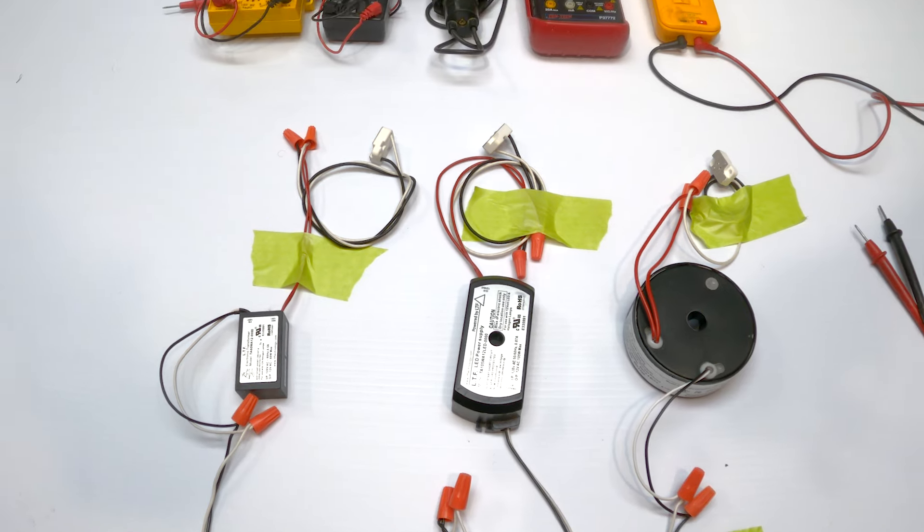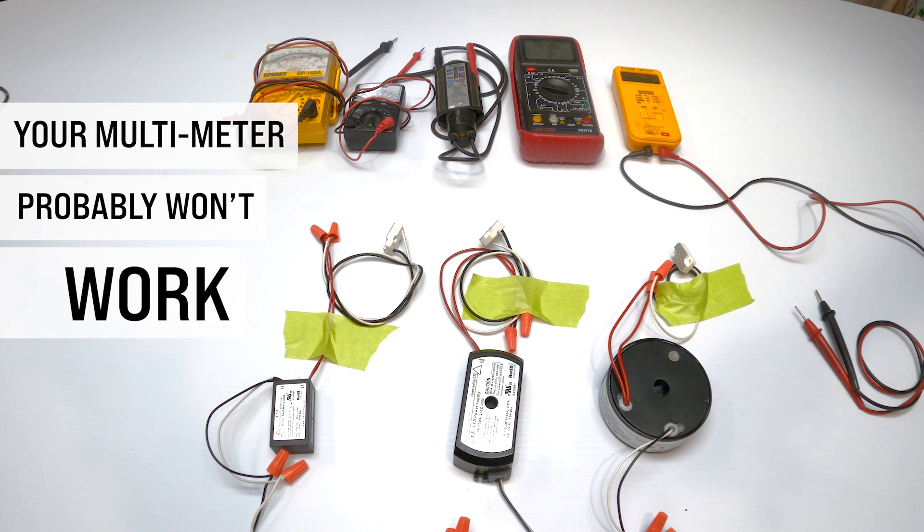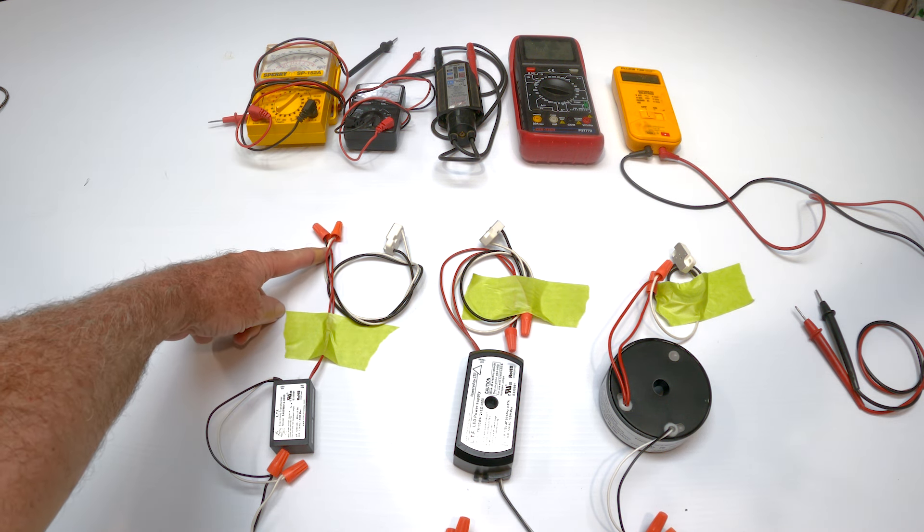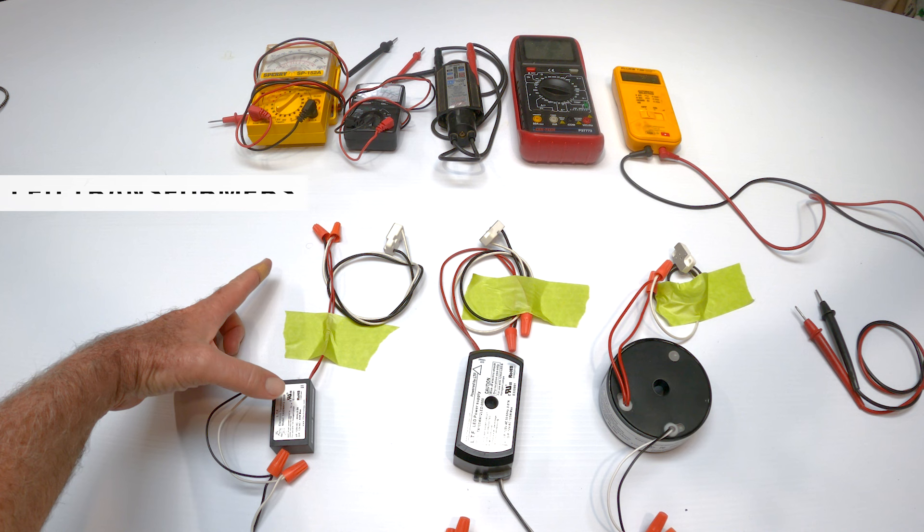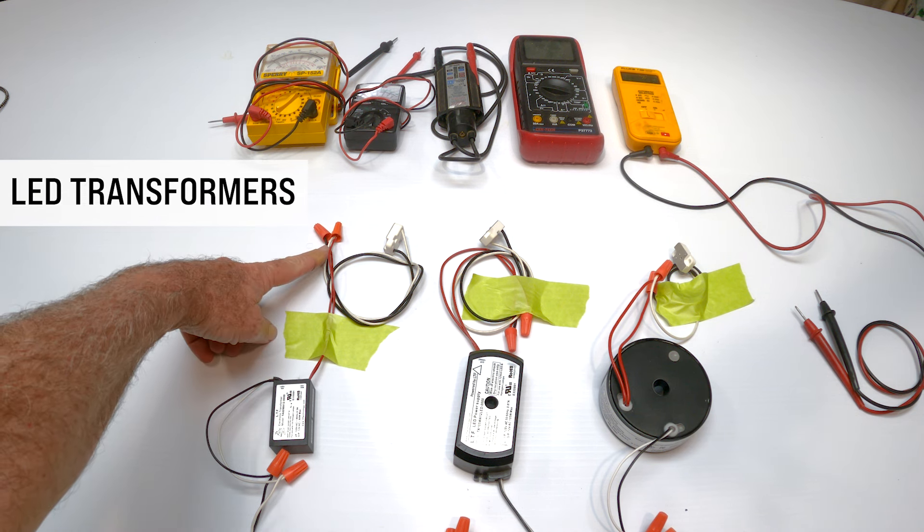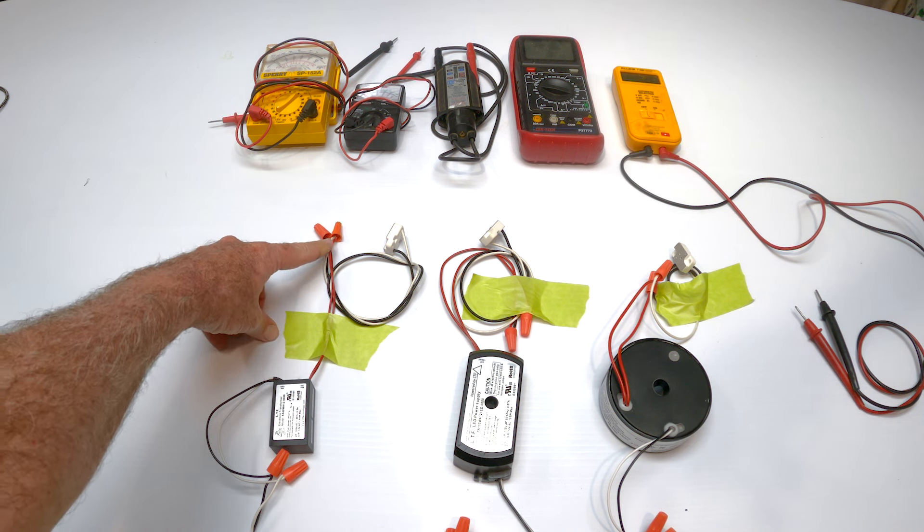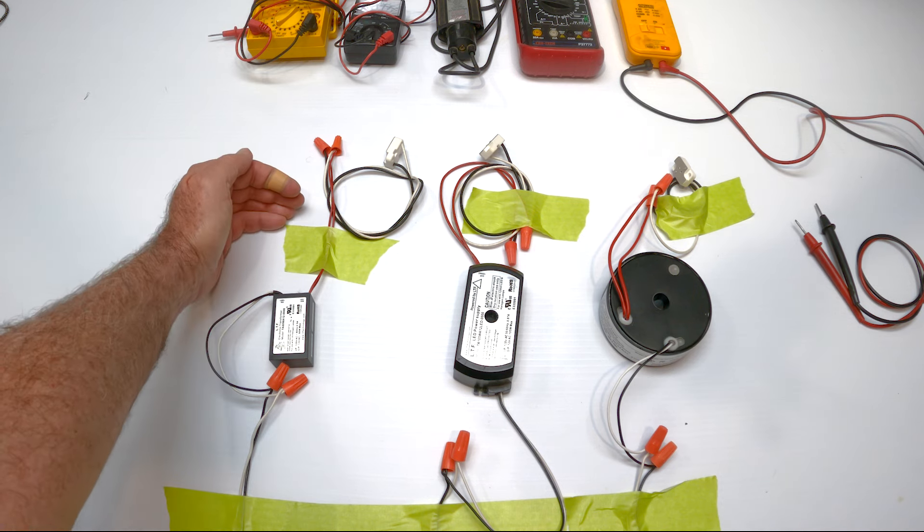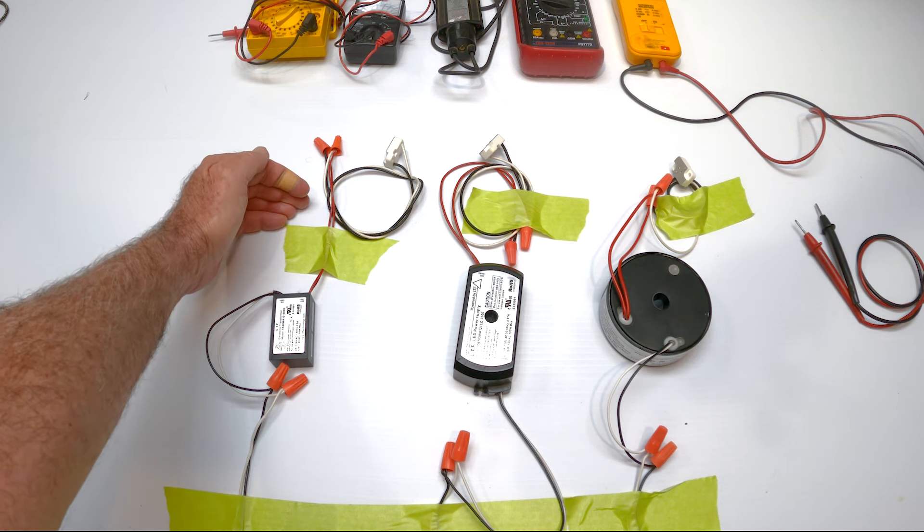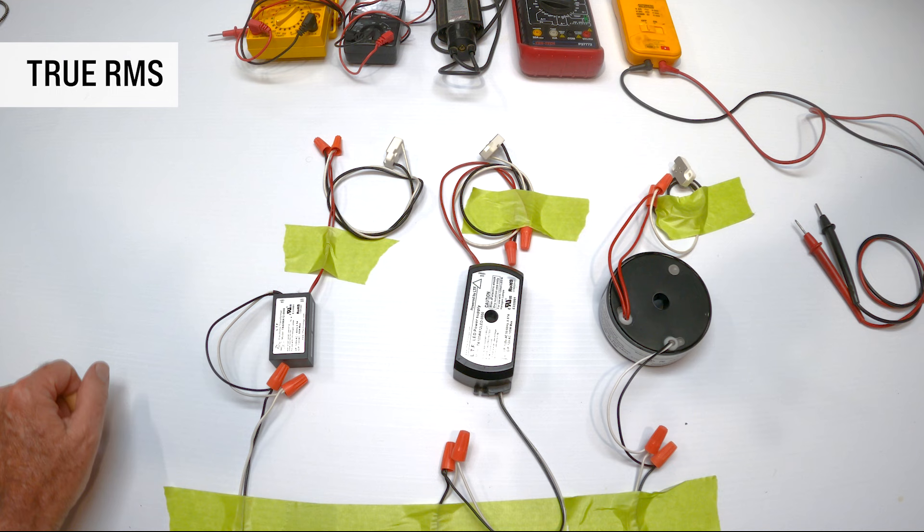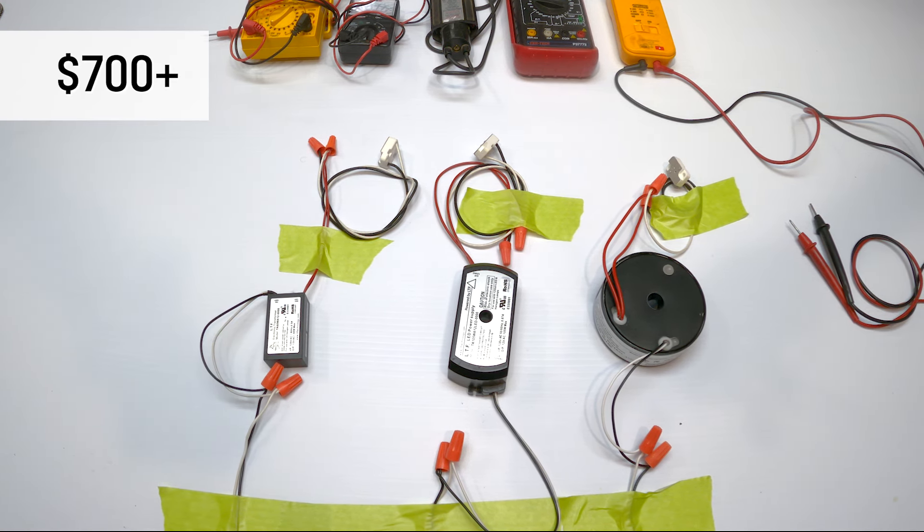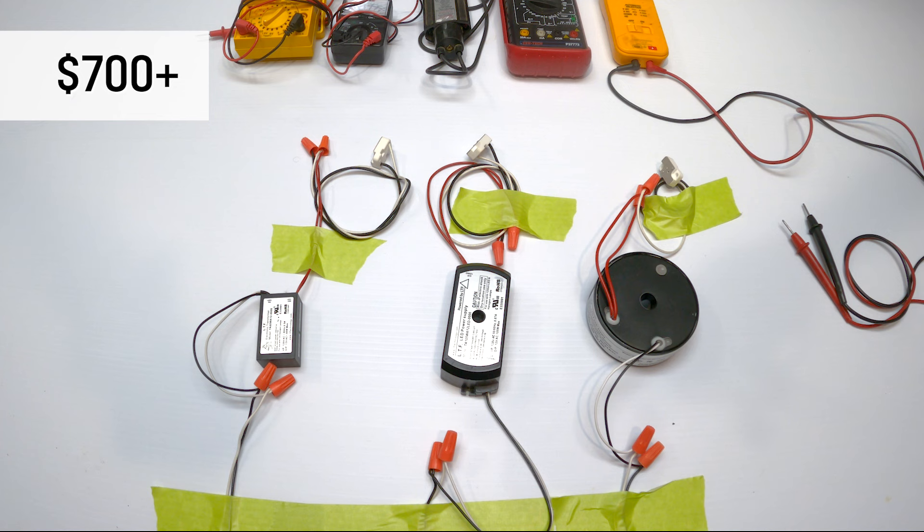This is a great test because none of your voltage meters, most likely, are capable of taking a voltage reading at this point. Because these are LED transformers, you can't use a standard voltage meter to test. You can on the 120 volt side, but on the 12 volt or the 24 volt side, you can't. You need a true RMS multimeter, and they range from about $700 up. So not too many people own those.